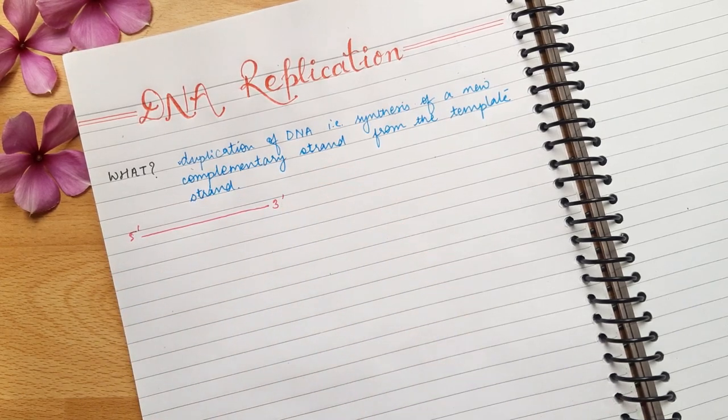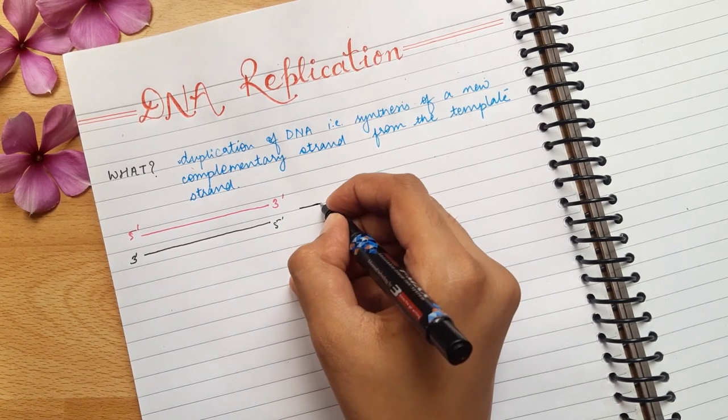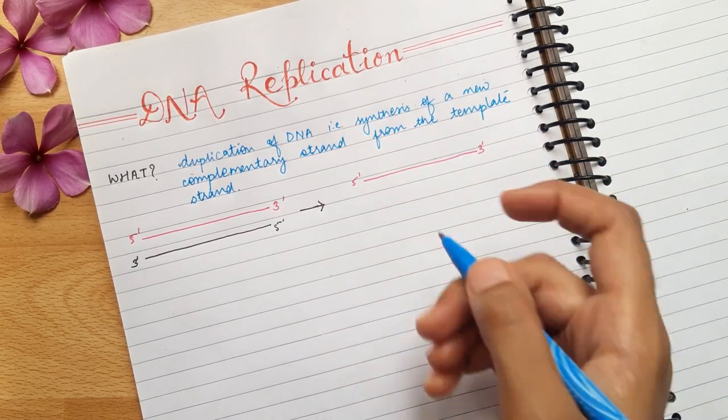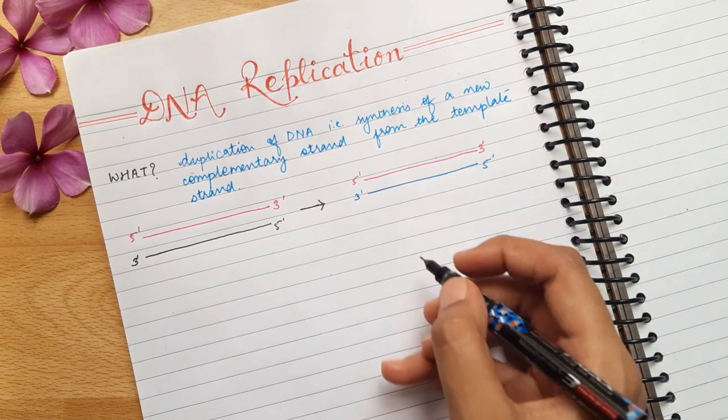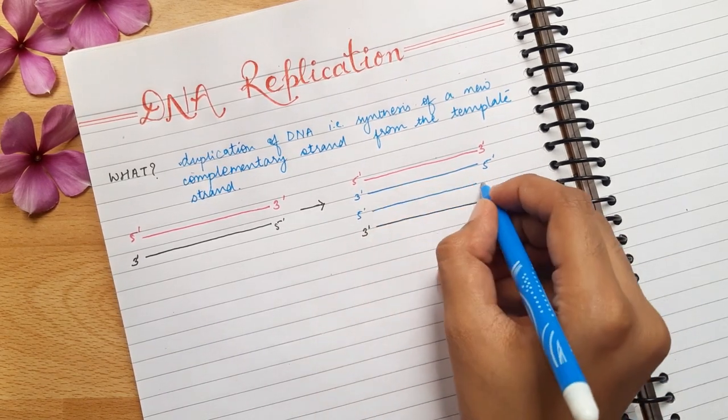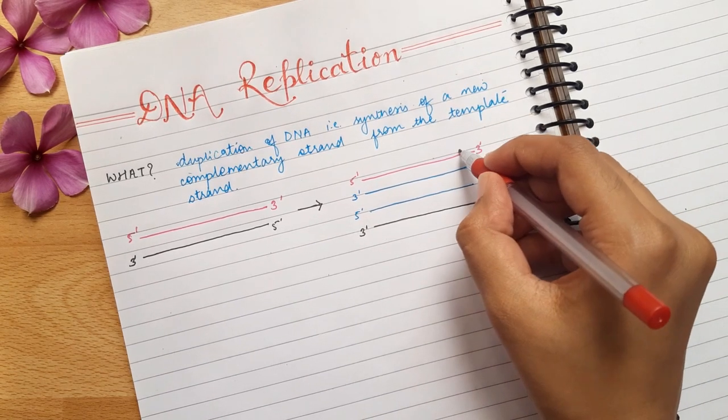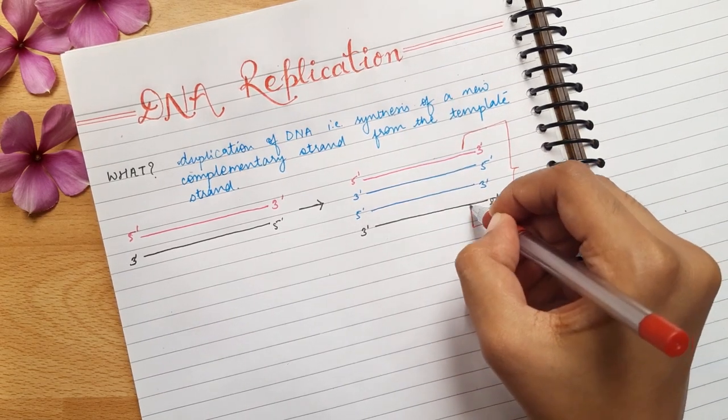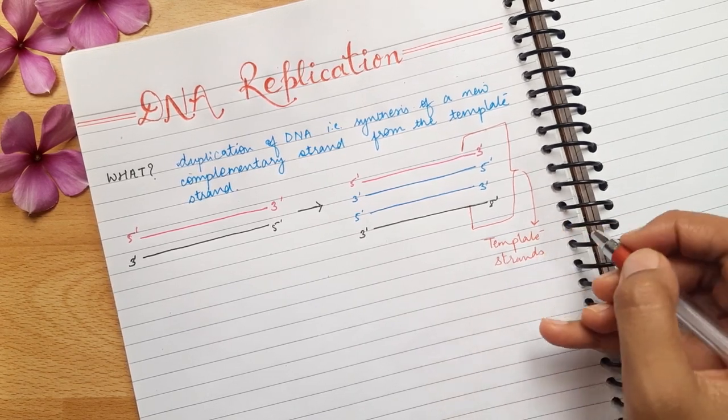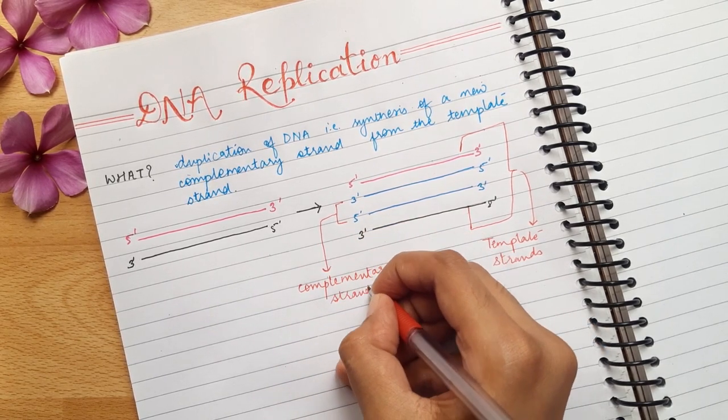Now, I'm drawing here a segment of DNA comprising of two strands. These two DNA strands after replication would form four strands as you can see here. Now, the blue colored ones are the newly synthesized strands and the pink and the black one are the parental strands. The sequences of base pairs in the complementary strands is dependent on the sequences of the base pairs in the parental strands. Therefore, these two red and black one are known as template strands and the newly synthesized ones are known as complementary strands.